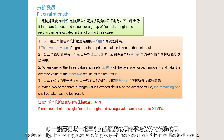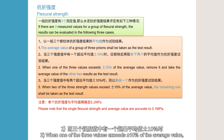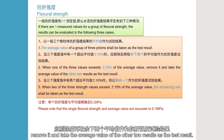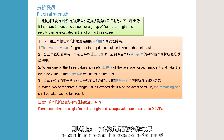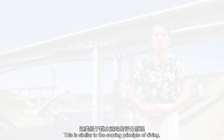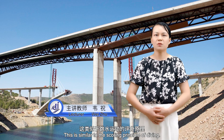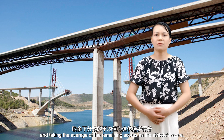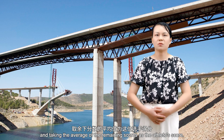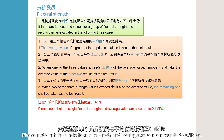Case 1: Generally, the average value of a group of three results is taken as the test result. Case 2: When one of the three values exceeds plus or minus 10% of the average value, remove it and take the average of the other two as the test result. Case 3: When two of the three strength values exceed plus or minus 10% of the average value, the remaining one shall be taken as the test result. This is similar to diving scoring — 10 judges, removing the highest and lowest scores, and averaging the rest. Note that single flexural strength and average values are accurate to 0.1 MPa.